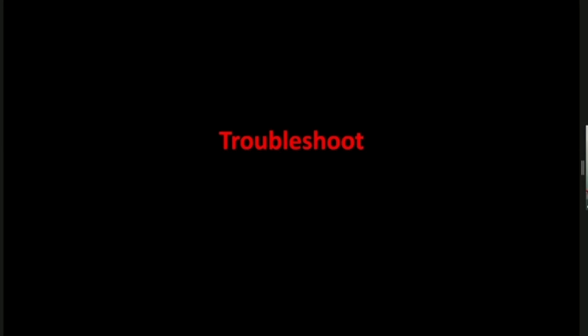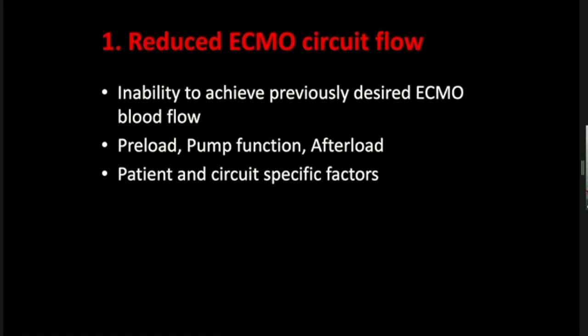In the last segment, we cover common problems you may encounter when reviewing an ECMO patient. The most common scenario is reduced ECMO circuit flow, defined as the inability to achieve the previously desired blood flow. Once ECMO blood flow drops, your ability to provide adequate oxygen delivery also suffers. ECMO blood flow is determined by preload, pump function, and afterload — anything affecting these will drop circuit blood flow. Causes can be classified as either patient-specific or circuit-specific factors.